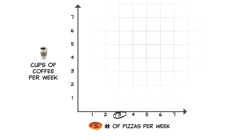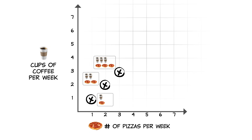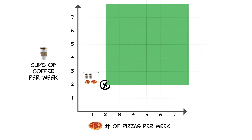Obviously, three pizzas and three cups of coffee are preferred to just two pizzas and two cups of coffee. Similarly, one pizza and one cup of coffee are less preferred to two pizzas and two cups of coffee. Consider this combination: two pizzas and two cups of coffee. In general, any combination in this region is preferred to the original combination.